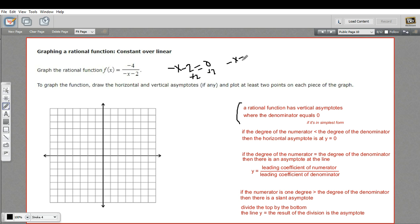So I get negative x equals 2. Divide that by negative 1, and we get x equals negative 2. So I'll go ahead and plot that line, x equals negative 2.